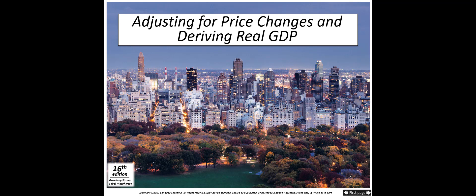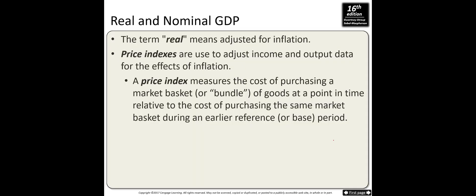Now we will talk about adjusting for price changes and deriving real GDP. The one we have learned so far is nominal GDP, which calculates GDP using current prices of goods. For example, if apples are two dollars and a small country produces ten apples, the nominal GDP from apples is twenty dollars. If it also produces twenty oranges at three dollars each, that adds sixty dollars, for a total of eighty dollars.